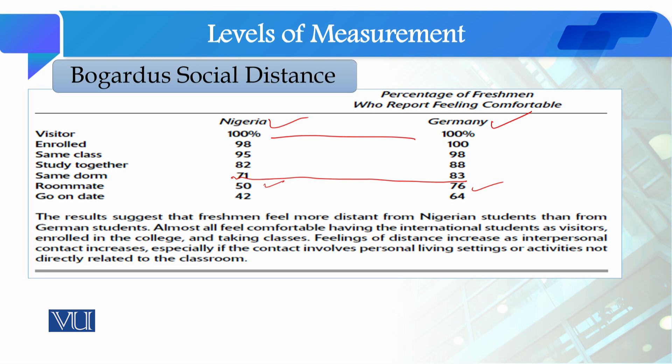Now we can measure the ethnic diversity of any community using this scale, as it is particularly designed to measure social distance. Students, we have now studied all five scales: Likert Scale, Thurstone Scaling, Guttman Scale, Semantic Differential Scale, and Bogardas Social Distance Scale. In the next video, we will discuss reliability.